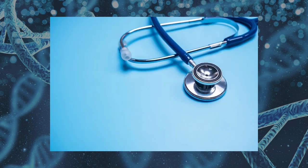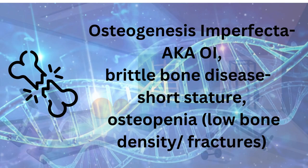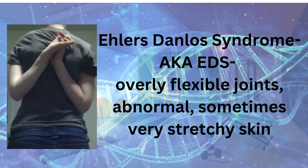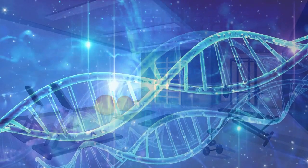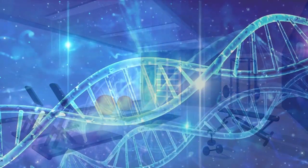Two diagnosable conditions are osteogenesis imperfecta and Ehlers-Danlos. Osteogenesis imperfecta, also known as OI and brittle bone disease, is characterized by short stature and osteopenia, which is low bone density. Some people may be under 3 feet tall and have hundreds of bone fractures. Ehlers-Danlos syndrome, also known as EDS, is characterized by overly flexible joints and abnormal, sometimes very stretchy skin. Sometimes the two conditions overlap and patients have the clinical symptoms of both OI and EDS.